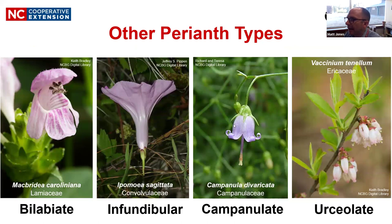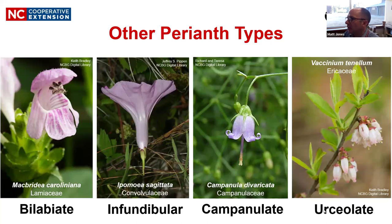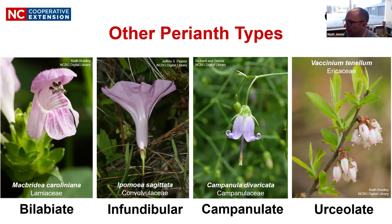Another term is campanulate — from the Latin for bell-shaped. It's a fused corolla that's somewhat squat and then starts to flare outward at the tip. Another is urceolate — it starts to widen, then narrows, then flares out slightly at the tip, like an urn. This is very common among plants in the heath family, especially the genus Vaccinium — the blueberry genus. Blueberries have classic urceolate or urn-shaped flowers.